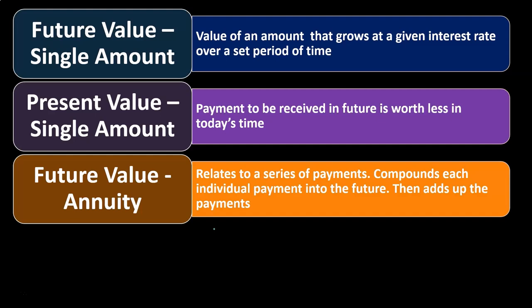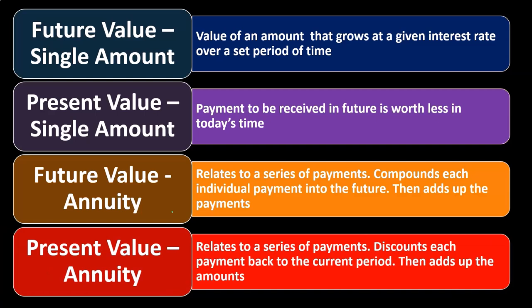For example, if I'm going to put $1,000 per year, per month, or per some fixed time frame into a savings account and I'm earning a standard rate of return on it, where will I be at the end of a set amount of time? If everything is standardized in that format, we can use the easier calculation, which is the future value of an annuity.